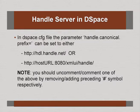Let us look at the handle server in DSpace. In the DSpace configuration file — where you find many parameters to customize DSpace — there is a parameter called handle.canonical.prefix. You have to set it to either hdl.handle.net or your host URL with port 8080, xmlui, and handle path. If you have registered with CNRI, enter hdl.handle.net, which is the URL of the CNRI site. If you have not registered, it is a good idea to enter your own URL instead.